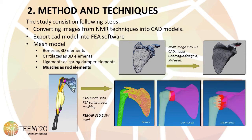The images at the bottom show the mesh of the bones, cartilage, and ligaments. In the first three cases, a 3D element has been used, and in the case of the ligament, truss-type elements were chosen.